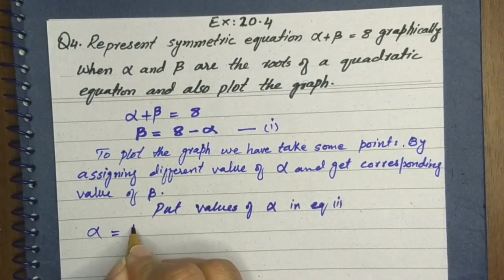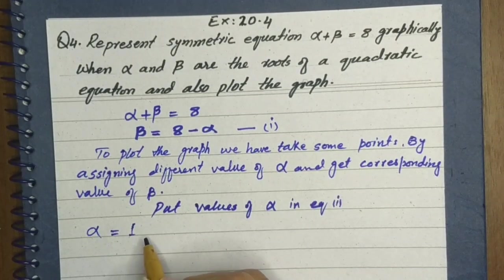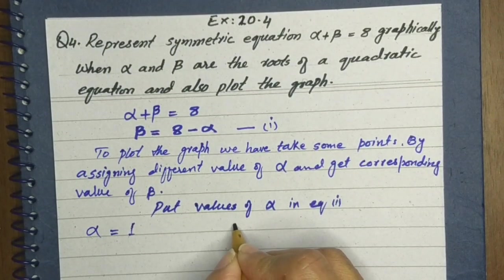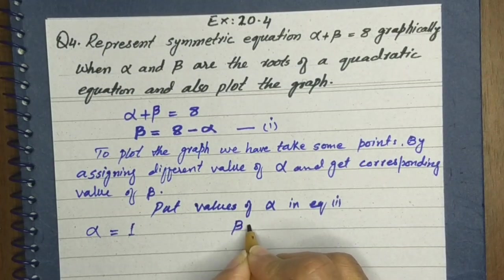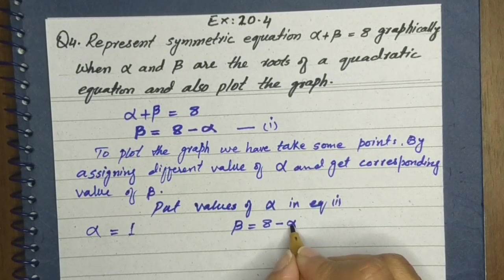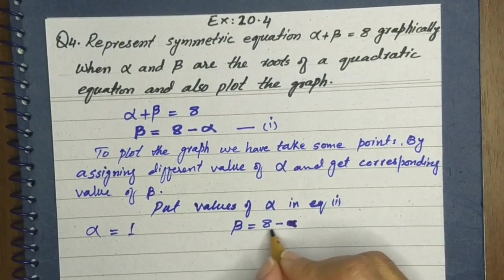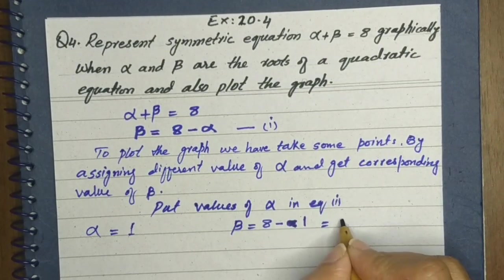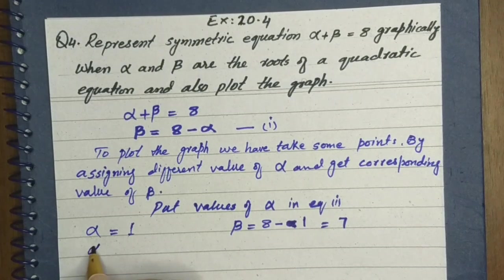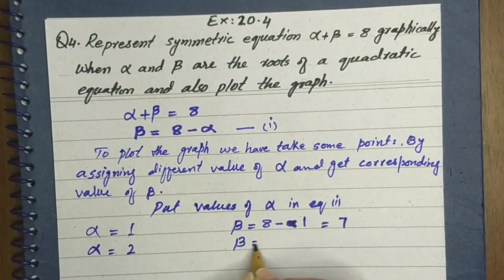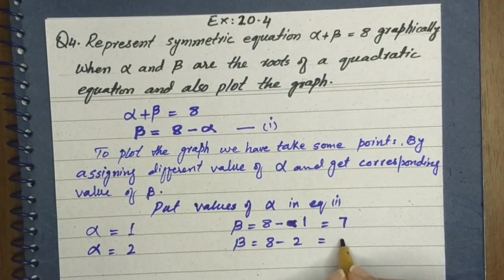We first take alpha equal to 1. You can take the value of alpha as anything — 1, minus 1, decimal points. The equation is beta equals 8 minus alpha. Putting alpha = 1: beta = 8 minus 1 = 7. Similarly, for alpha = 2: beta = 8 minus 2 = 6.